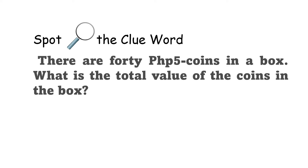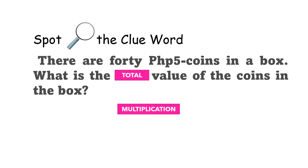Next, spot the clue word. There are 45 peso coins in a box. What is the total value of the coins in the box? The word 'total' means multiplication — 40 times 5.